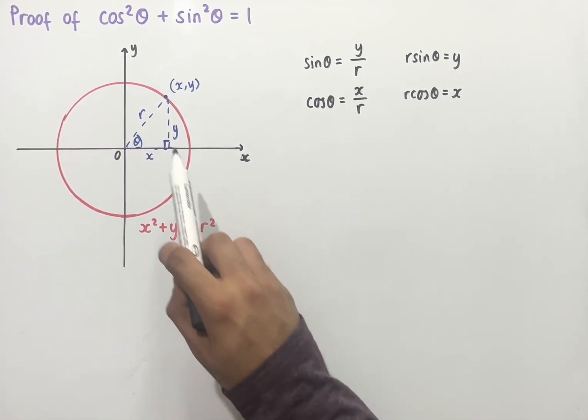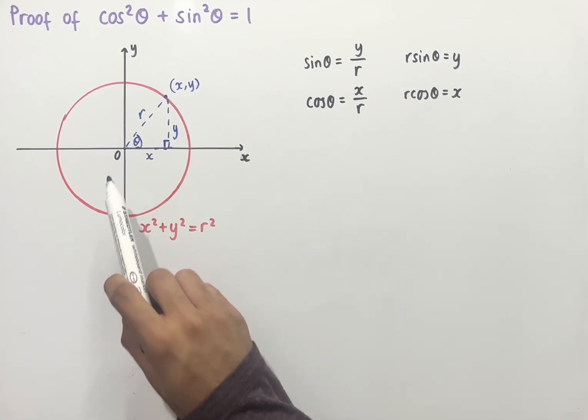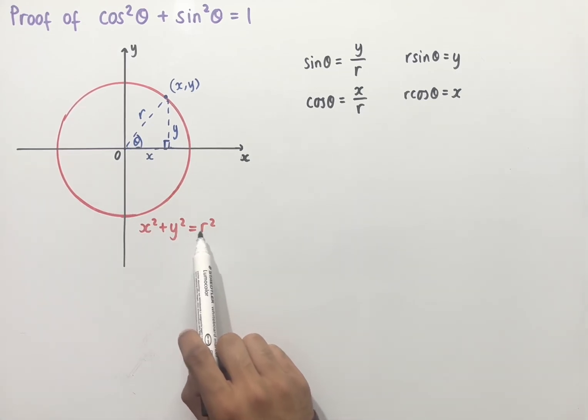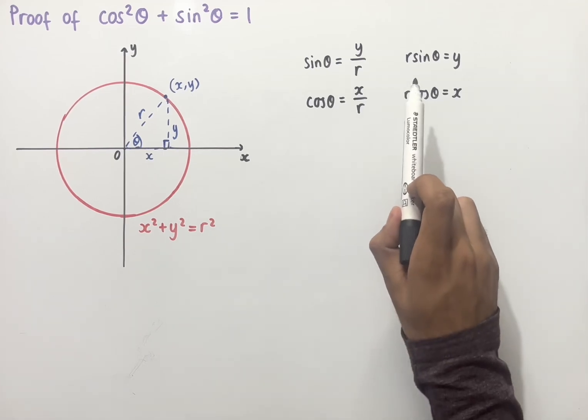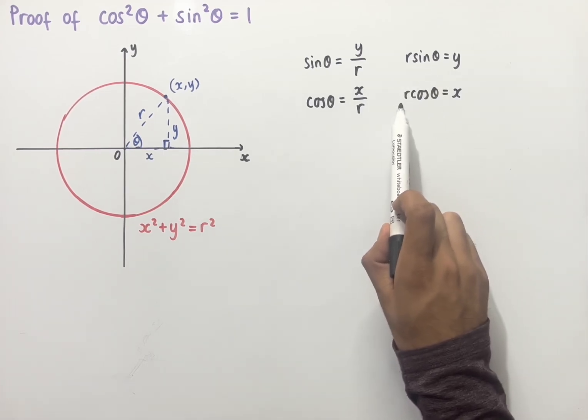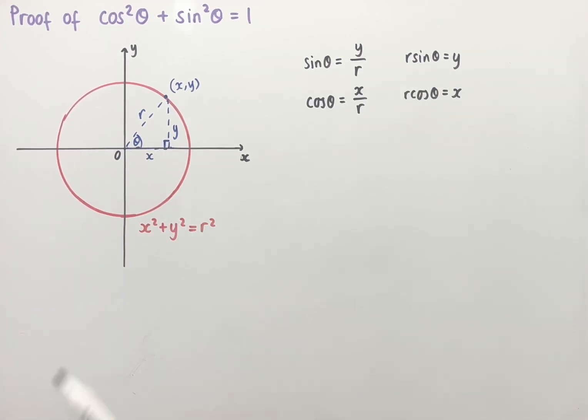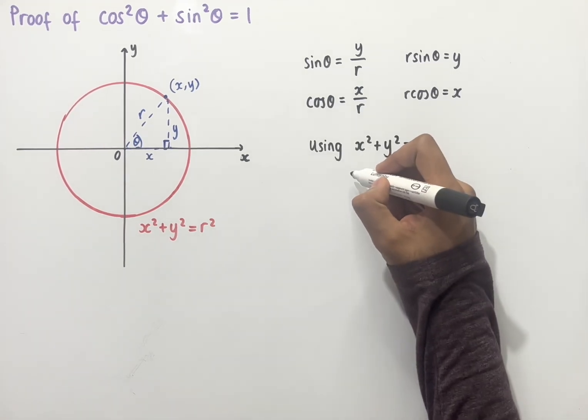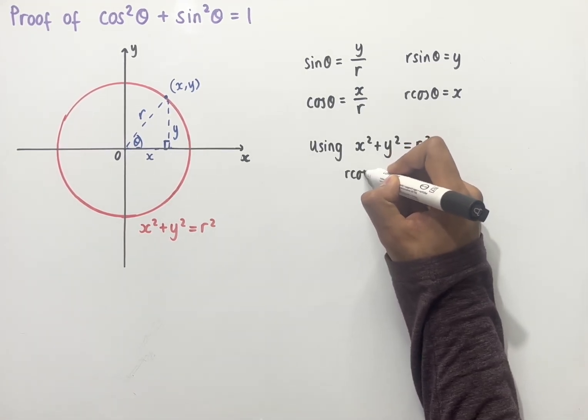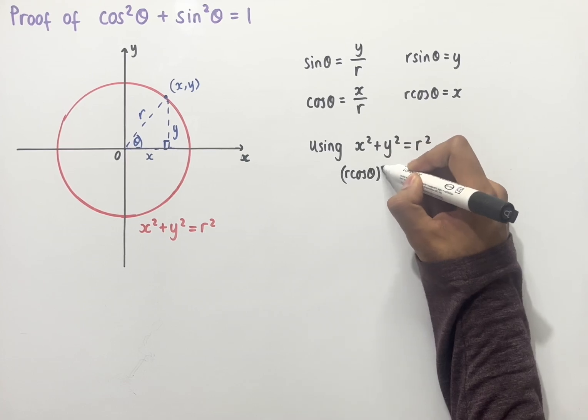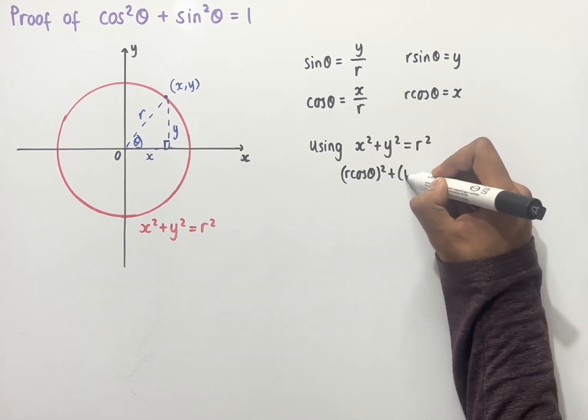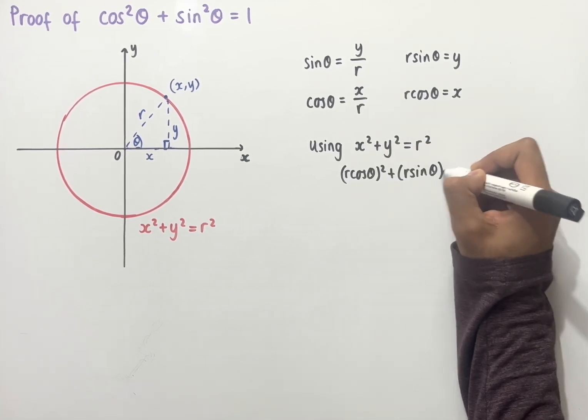Since we know that the equation of a circle centered at the origin is of the form x squared plus y squared equals r squared, we can now substitute r sin theta and r cos theta into this equation. And so doing that, we end up with r cos theta all squared plus r sin theta all squared, and then all of this equals r squared.